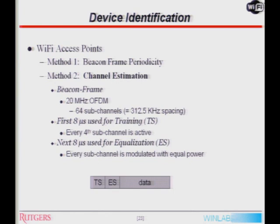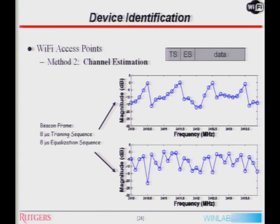Let's move to Wi-Fi. One technique I'll talk about is channel estimation. By leveraging protocol-specific information and channel estimates, we can differentiate Wi-Fi access points. Wi-Fi access points are typically stationary and transmit beacon frames periodically. These beacon frames are 20 MHz OFDM signals utilizing 64 sub-channels spaced 312.5 kHz apart. At the beginning of every beacon frame transmission, there is a training sequence and an equalization sequence, each 8 microseconds long, really used for channel sounding. A client will estimate the channel based upon the knowledge that these signals are transmitted.